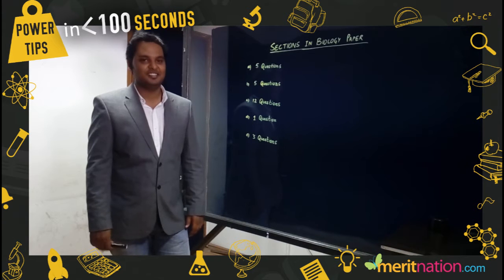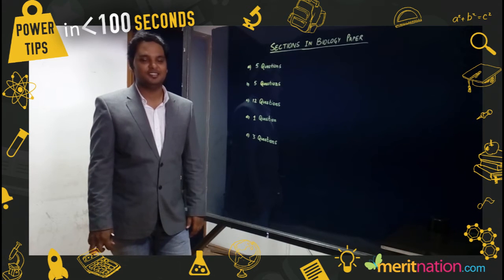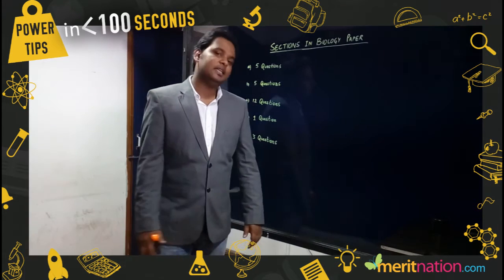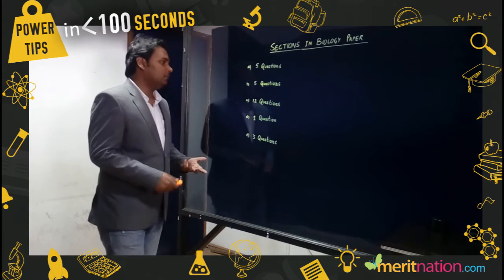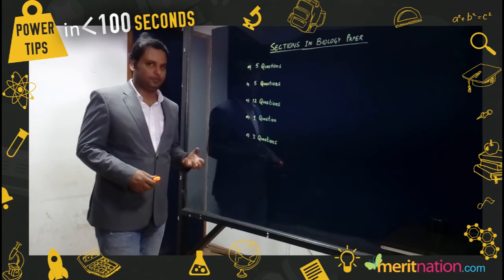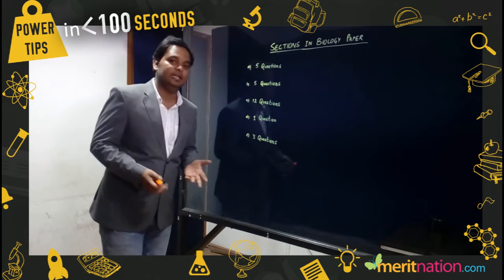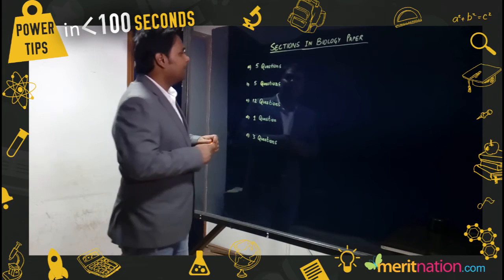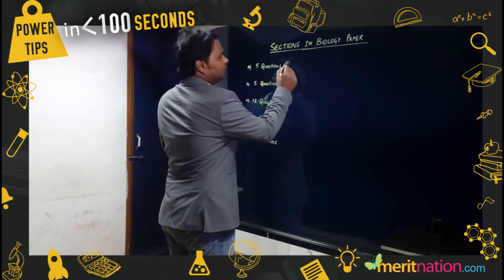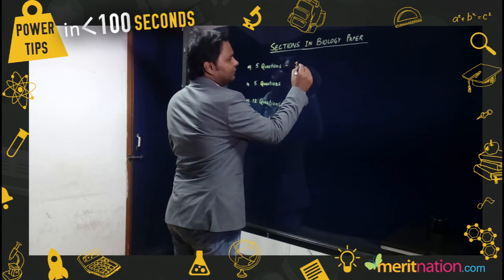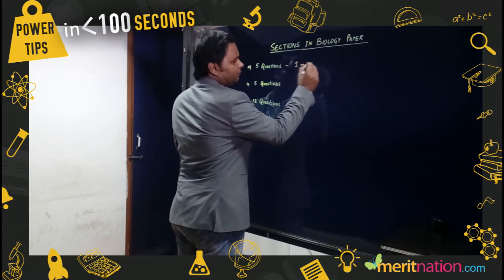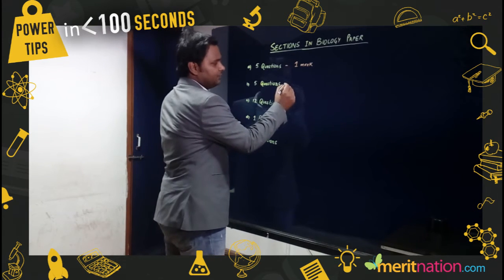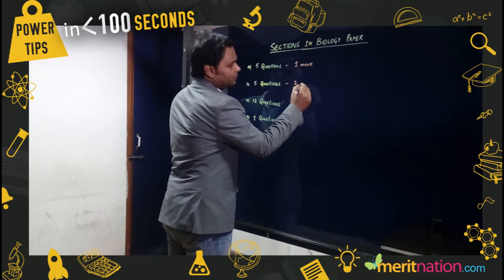What strategy should we adopt to tackle the biology board exam paper? Your biology exam consists of five sections: A, B, C, D, and E. Section A has five questions of one mark each. Section B also has five questions, but each is worth two marks.